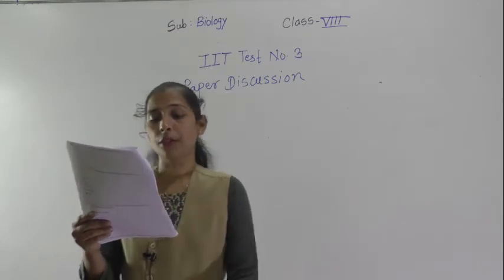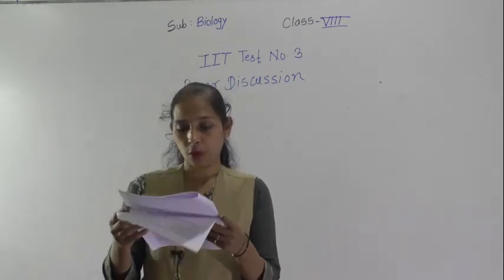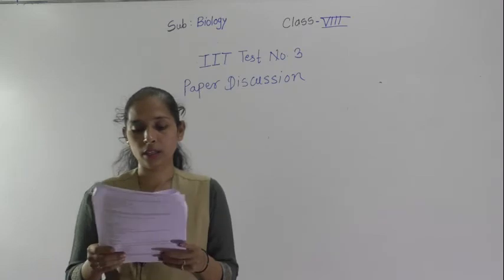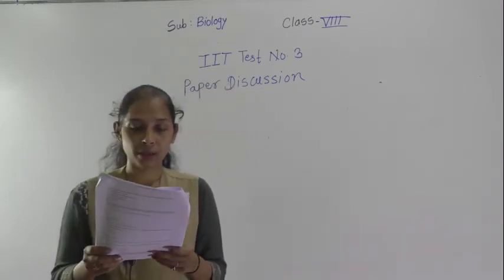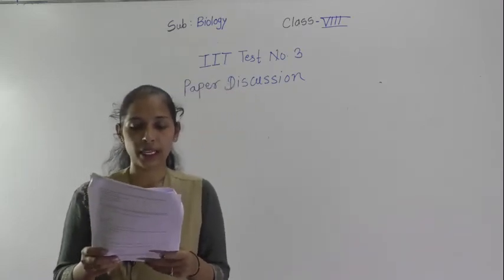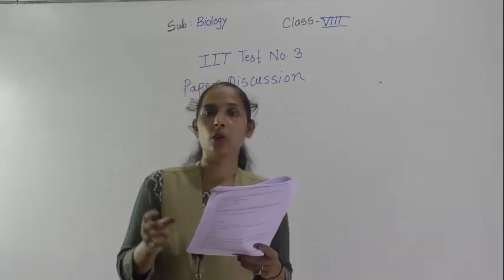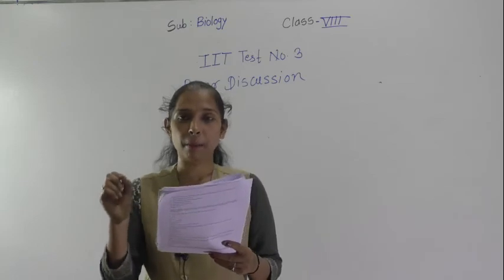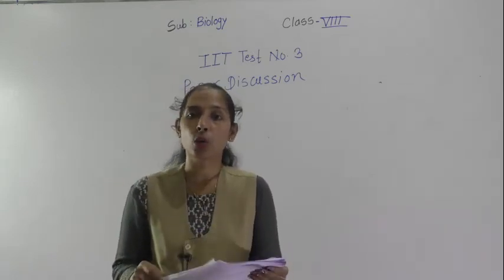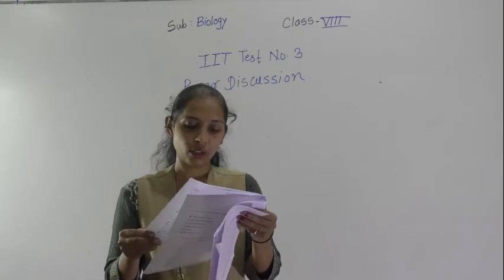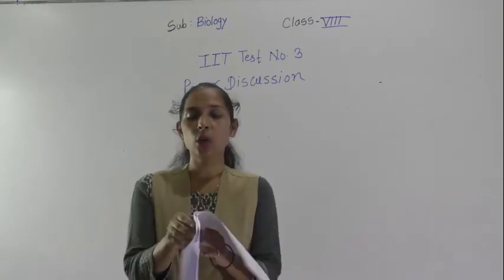Question number 20: which of the following is the green plastid? The green plastid in plants is the chloroplast, and inside the chloroplast there is a green colour pigment called chlorophyll. So the correct option is C — chloroplast.